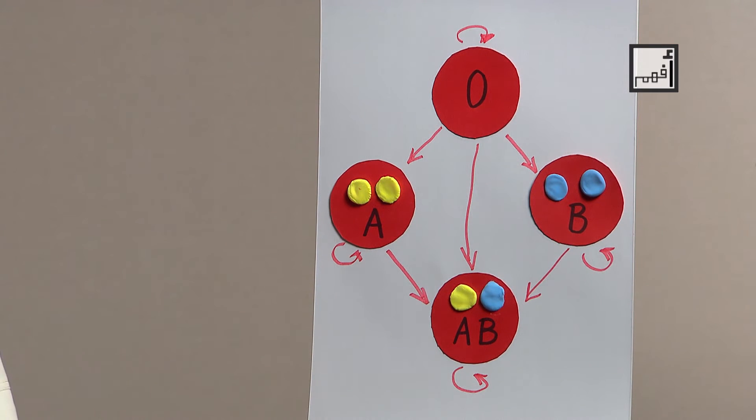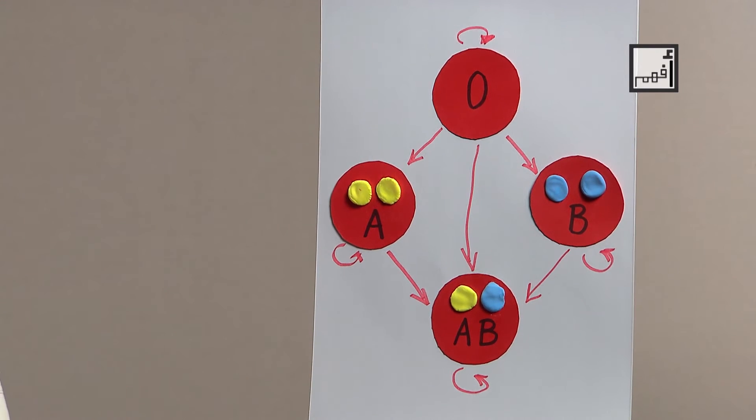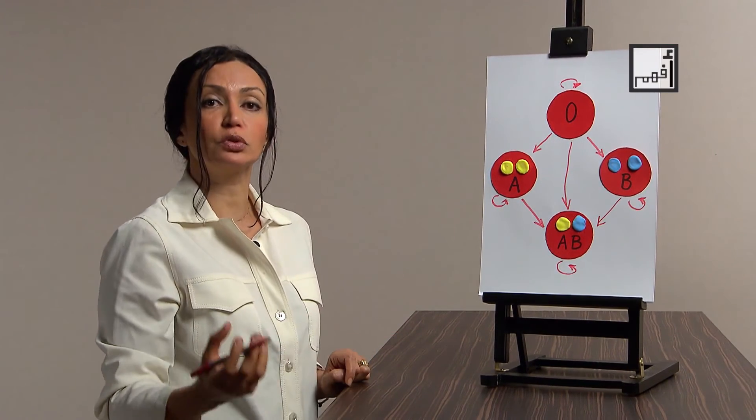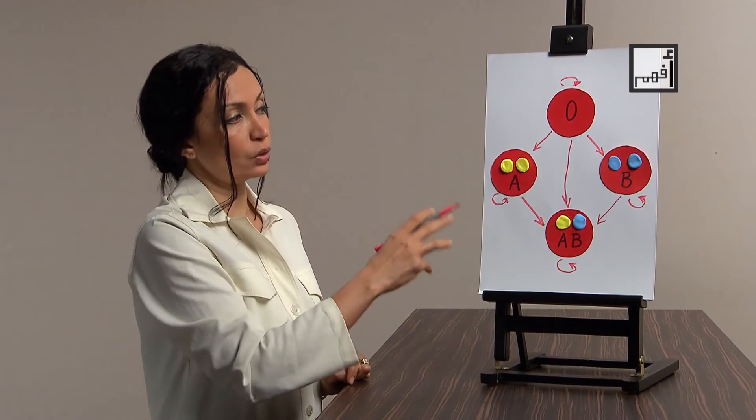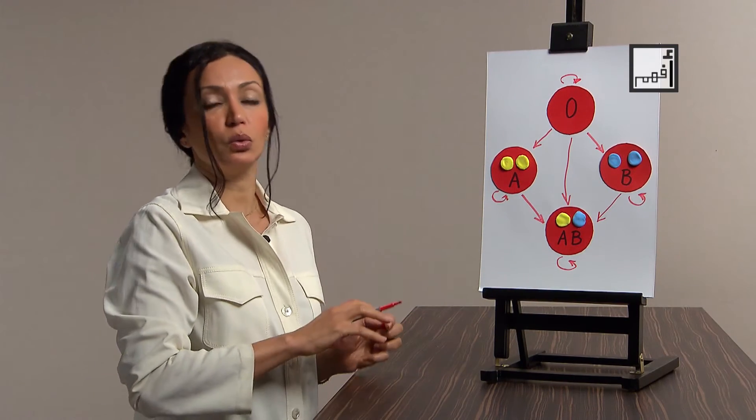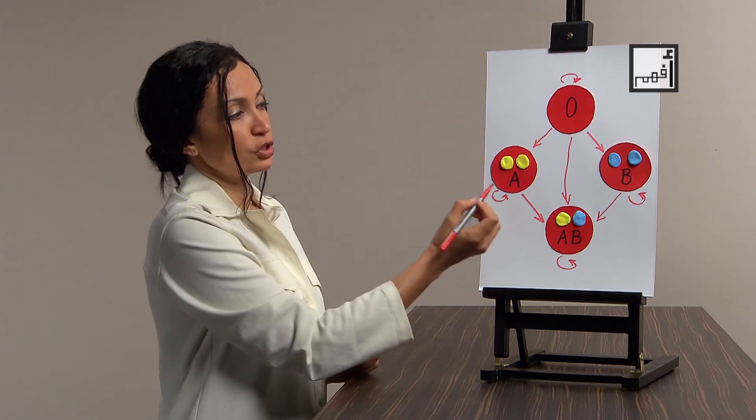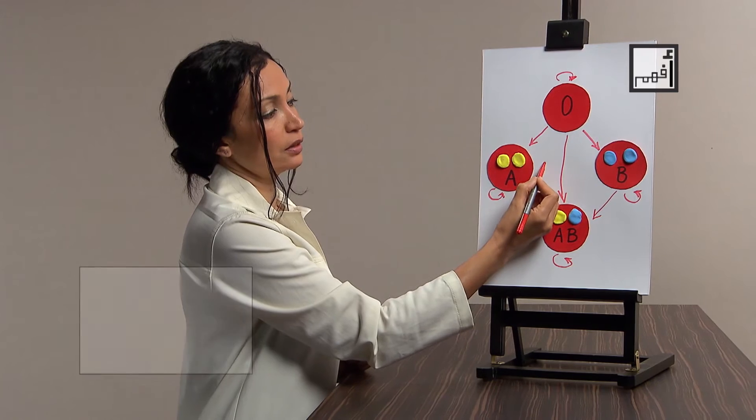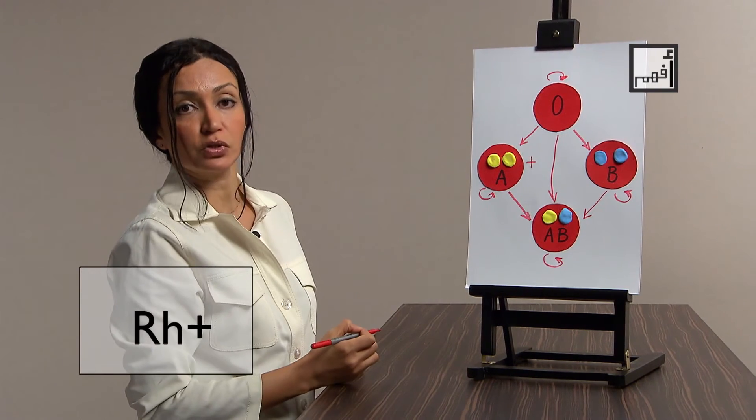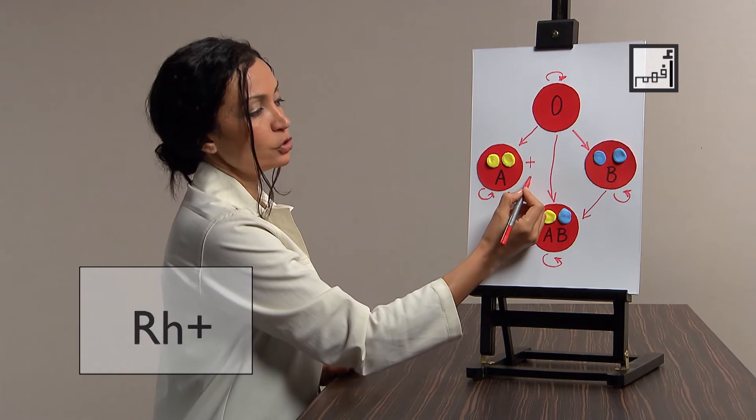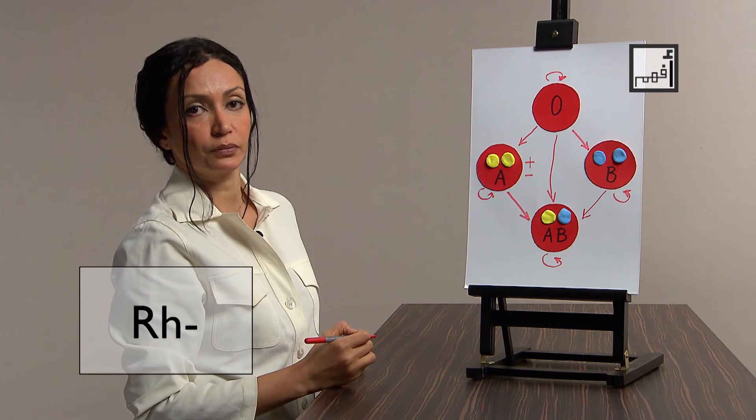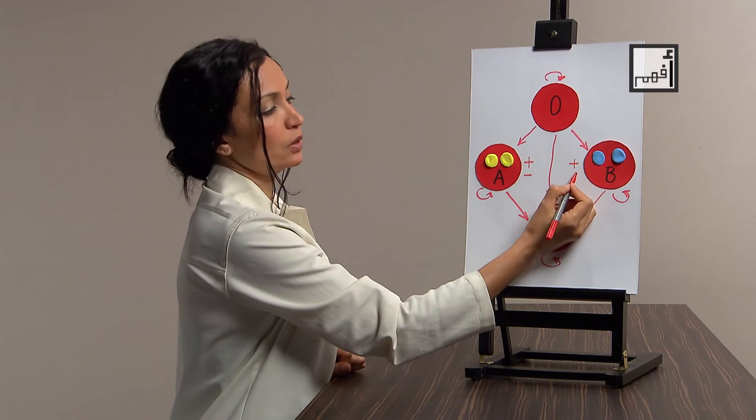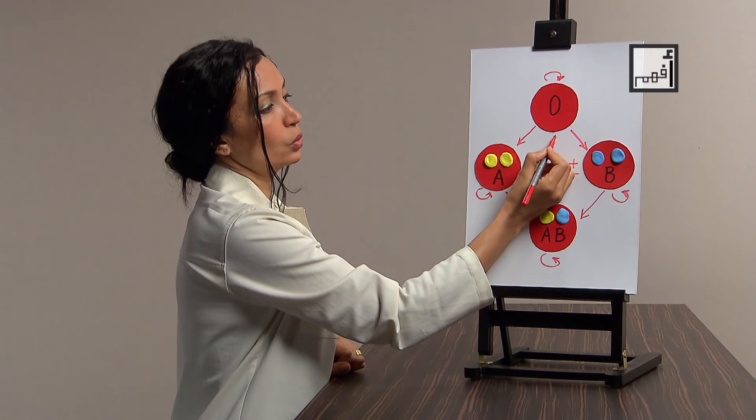But hold it right there. Another scientist came along and said, hey, I found out from my researches on rhesus monkeys that there is a certain protein, and I call it the Rh factor, that may be present in all groups or may be absent. Now we know that group A individuals who have rhesus factor are called A positive. So the group A individuals who have not got the Rh factor are called A negative. The same for blood group B, AB and O. They might be rhesus positive or negative.